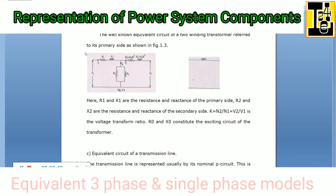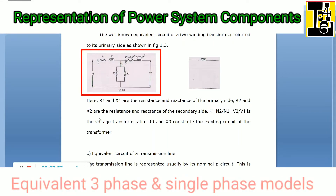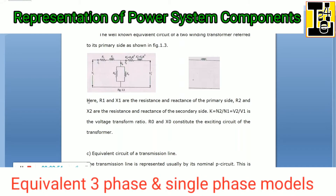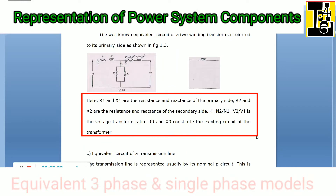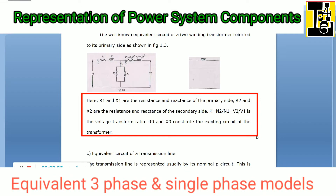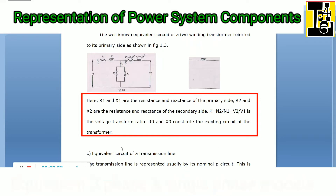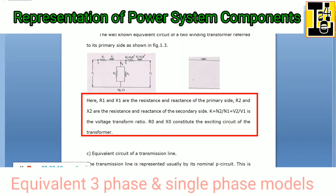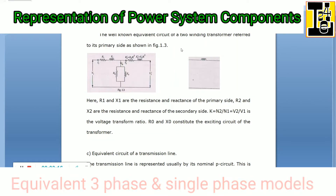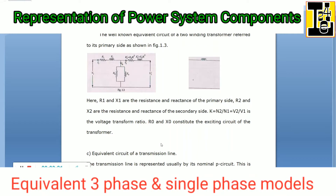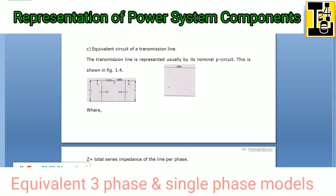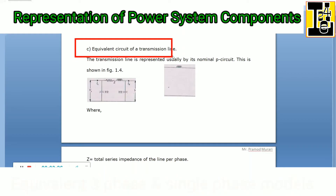A well-known equivalent circuit of a two-winding transformer referred to the primary side is shown here. R1 and X1 are the resistance and reactance of the primary side; R2 and X2 are the resistance and reactance of the secondary side. k equals N2 over N1, which equals V2 over V1, is the voltage transformation ratio. R0 and X0 constitute the exciting circuit of the transformer. This is the single phase equivalent reactance diagram of the two-winding transformer.